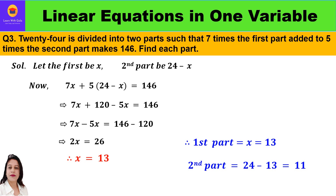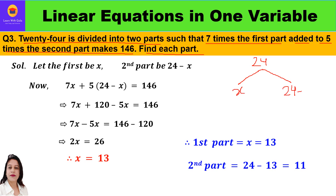The third question is: 24 is divided into two parts such that seven times the first part added to five times the second part makes 146. Find each part. So we have the number 24 divided into two parts. Let the first part be x, so the other part will be 24 minus x.